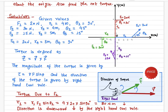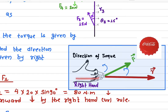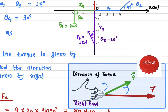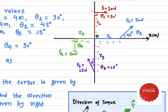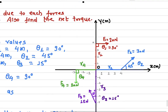To find the direction we use the right-hand rule. Use your right hand — align your palm in the direction of the position vector, then curl your fingers from the r vector toward the F vector. If you do this, you will see that your thumb points in the downward direction — that is, into the paper.